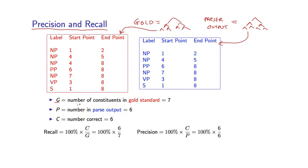Now we can define various numbers. So I'll define G to be the number of constituents seen in the gold standard tree. In this case, it's 1, 2, 3, 4, 5, 6, 7. And I'll define P to be the number of constituents in the output from the parser. In this case, it's 1, 2, 3, 4, 5, 6.